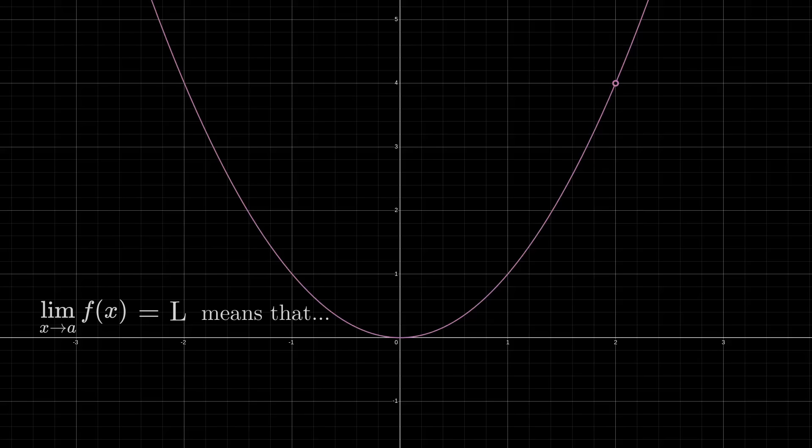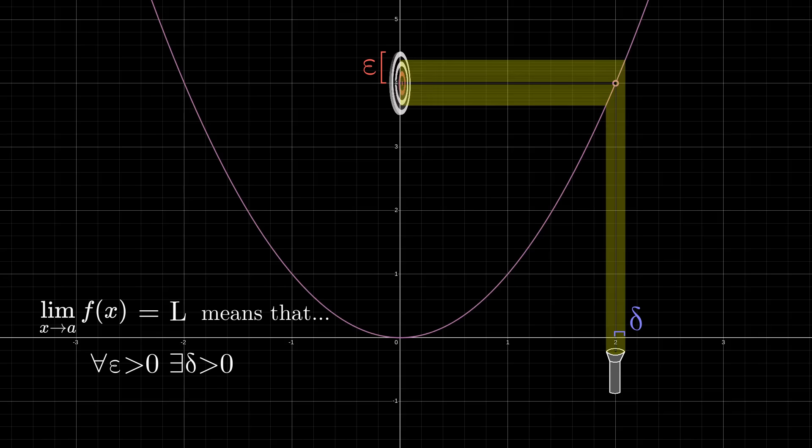So the final rigorous definition that we come to is that for any epsilon greater than 0, that's the size of our target, we can find a delta greater than 0, that's the width of our flashlight beam. So that if 0 is less than absolute value of x-a is less than delta, meaning x starts inside of our flashlight beam, then the absolute value of y-l is less than epsilon, meaning that y ends up on our target.